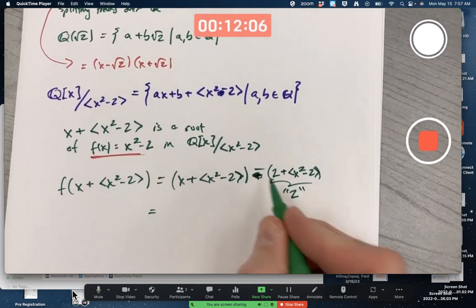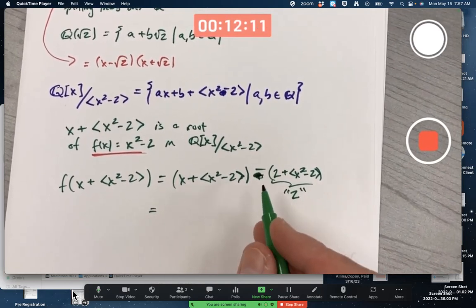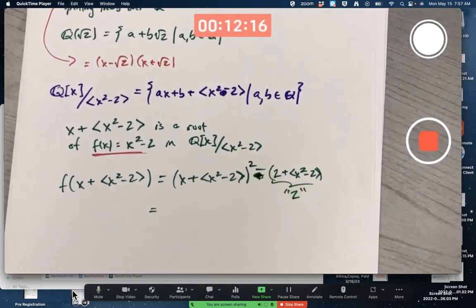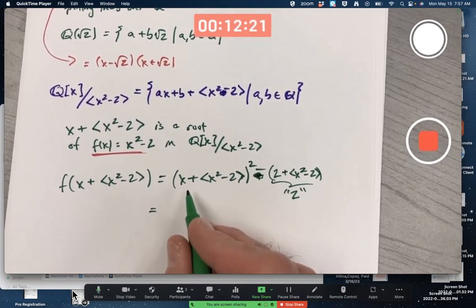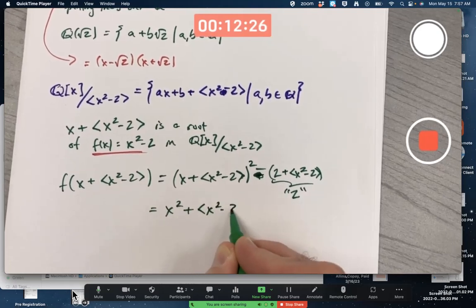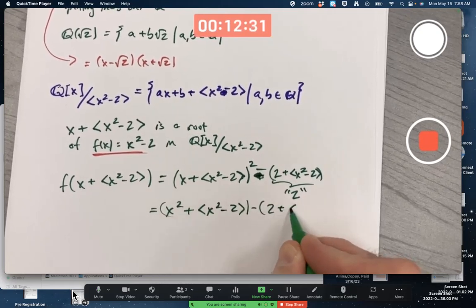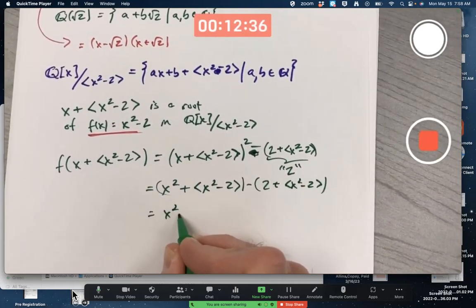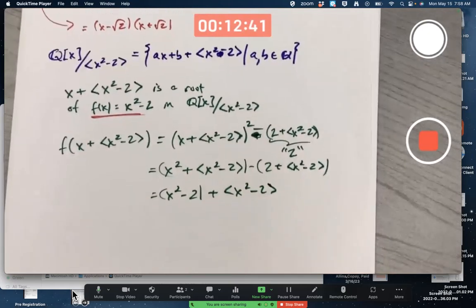And so how do you do this? Like always, you combine cosets by combining their representatives with the same operation. First I got to square that, so I'm multiplying this coset by itself, meaning I multiply the representative by itself: x times x is x². And then I'm subtracting these cosets, so I subtract their representatives.